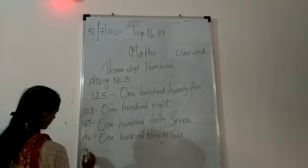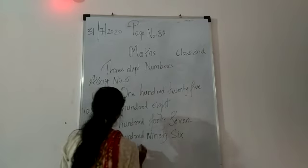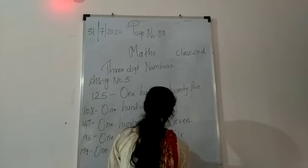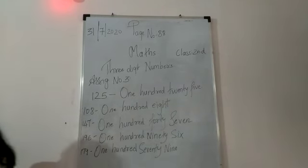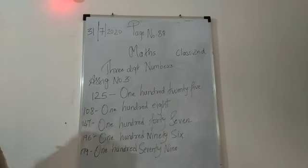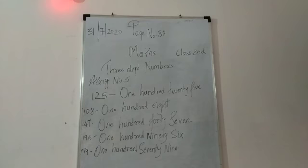And the last is 179 — see the correct word and match it with this number. So today we have seen 3-digit numbers in assignment number 1, 2, and 3. I request the kids to kindly complete it in a term 1 notebook, page number 88. Thank you.